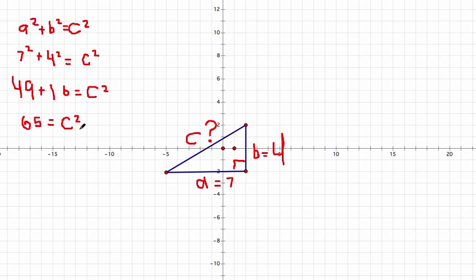Now we need to find the distance of C, not C squared. So we need to somehow cancel out this two right here. To do that, we simply take the square root of C. But remember, whatever is done on this side of the equation must be done on this side of the equation. So if we take the square root of C squared, we have to take the square root of sixty-five.